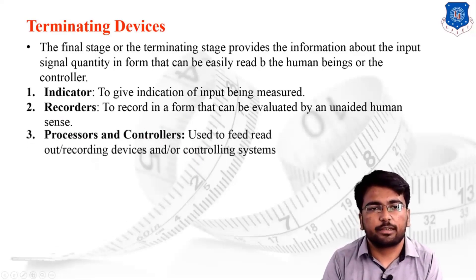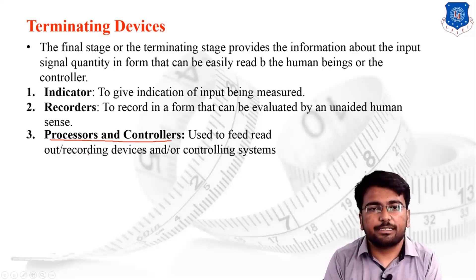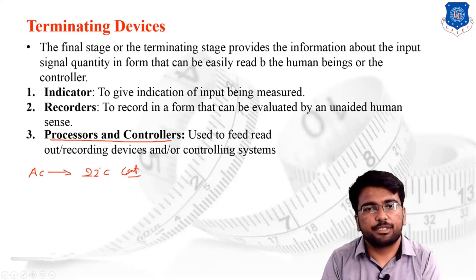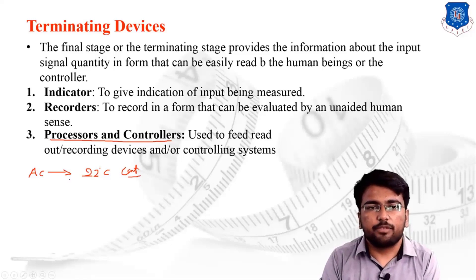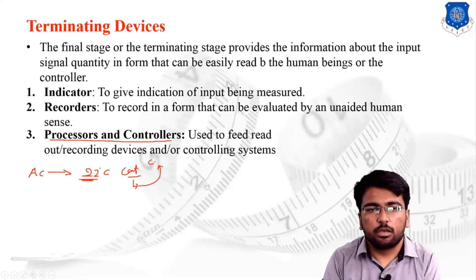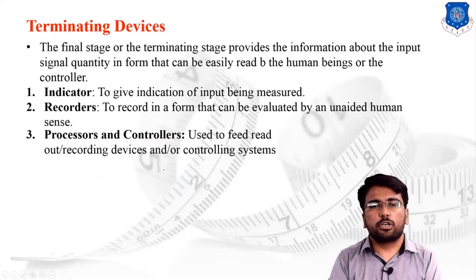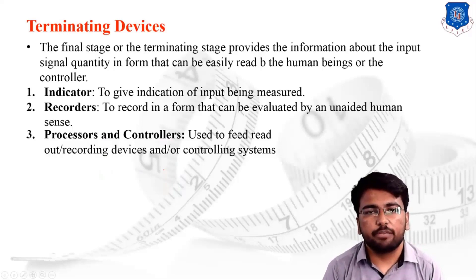The last category is the processor or controller. The processor and controller are used to feed, read out, or interface with recording devices and controlling systems. For example, if we set an AC to maintain a temperature of 22 degrees Celsius, a controller inside the measuring system will activate once the temperature reaches 22 degrees, sending a signal to the compressor to turn it off. When the temperature rises to 23 or 24 degrees, the controller signals the compressor to start again, maintaining the required room temperature.